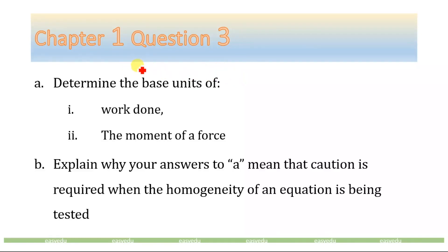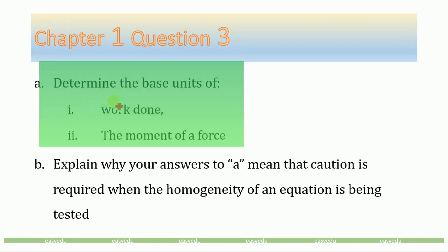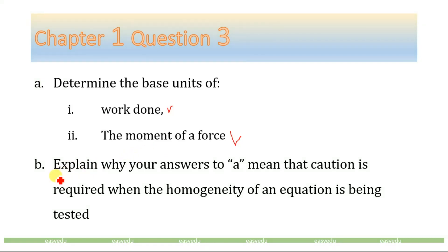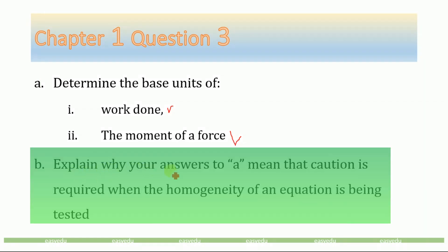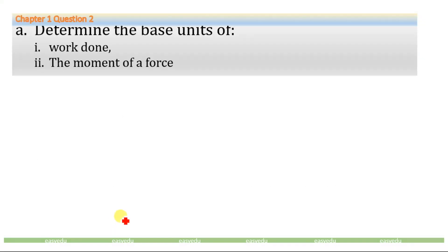This is question number 3 from the AS A Level Physics of Cambridge International. This question has two parts. Part A is to determine the base units of work done and the moment of force. Part B is to explain why caution is required when the homogeneity of an equation is being tested.